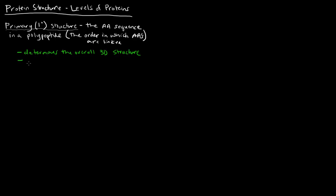Another thing to keep in mind is that the primary sequence — the sequence of amino acids — is read from the amino terminus, from N to C, or from the amino terminus to the carboxy terminus.